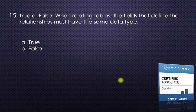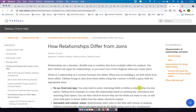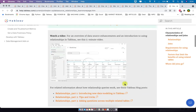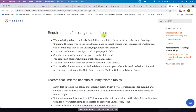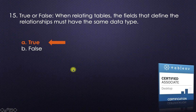True or false: when relating tables, the fields that define the relationship must have the same data type. This is true — if the fields don't have the same data type, records from two tables can't be matched. Tableau help confirms under 'Requirements for Using Relationships': the fields that define the relationship must have the same data type, and changing the data type in the data source page does not change this requirement.